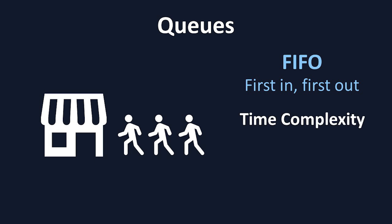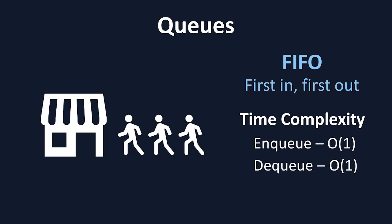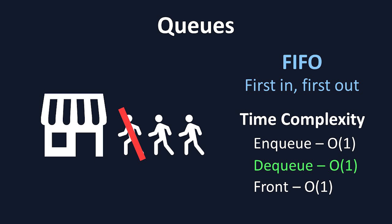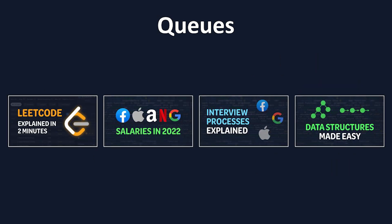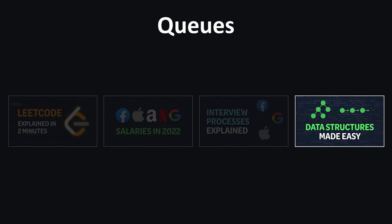Queues have very similar operations to stacks, which are called enqueue, dequeue, and front. Enqueue is like push for a stack, and is when a new element is added to the back of the queue. Dequeue is like pop for a stack, and is when the element on the front of the queue is removed. Front is like peek for a stack, and is when you take a look at the frontmost element in the queue. Queues are often more frequently used than stacks, especially in real-world programming. Think of something like YouTube playlists — when you start watching a playlist, you'll start with the video that was added first, and the last video you watch will be the final one that was added.